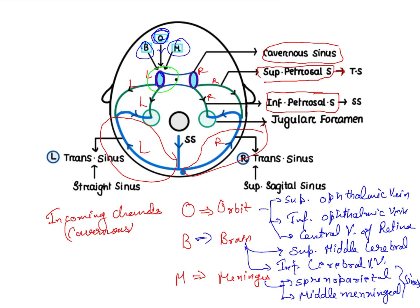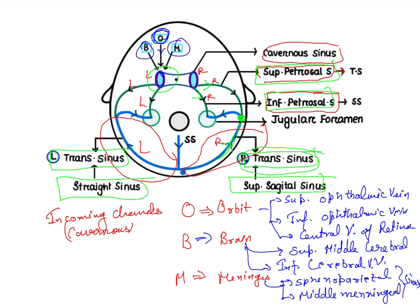After the cavernous sinus, you can see the superior petrosal sinus and the inferior petrosal sinus. These sinuses meet and drain into the transverse sinus. The transverse sinus on the right side gets its drainage from the superior sagittal sinus, while the left transverse sinus gets it from the straight sinus — this distinction can be an important exam question.